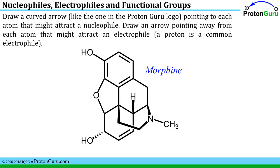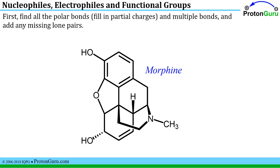Now we transition to a different type of problem, where we're asked to draw curved arrows pointing to each site that might attract a nucleophile, and draw arrows pointing away from each site that might attract an electrophile. To start this process, we should find all of the polar bonds. Remember, electrophiles will be attracted to negative sites, and nucleophiles will be attracted to positive sites. If we fill in partial charges, we'll start to address that problem. Also remember that multiple bonds are areas where there are extra electrons — there are four electrons in a double bond, for example.